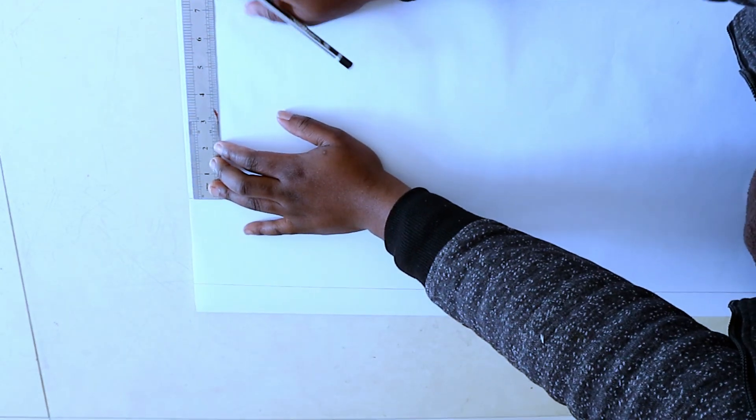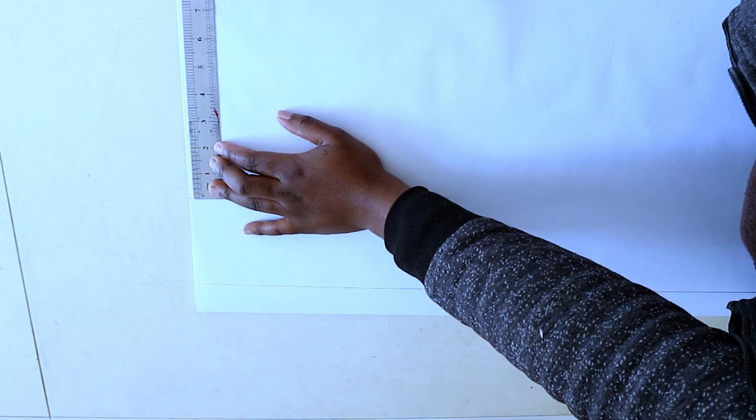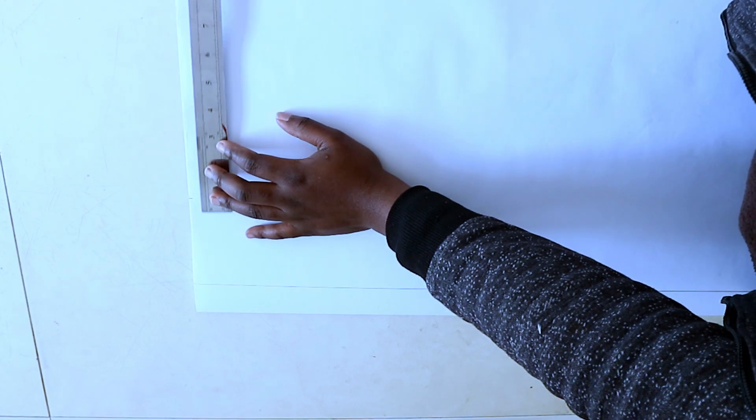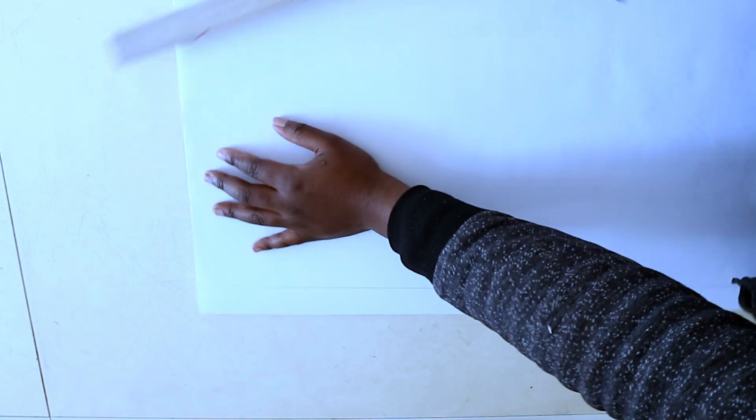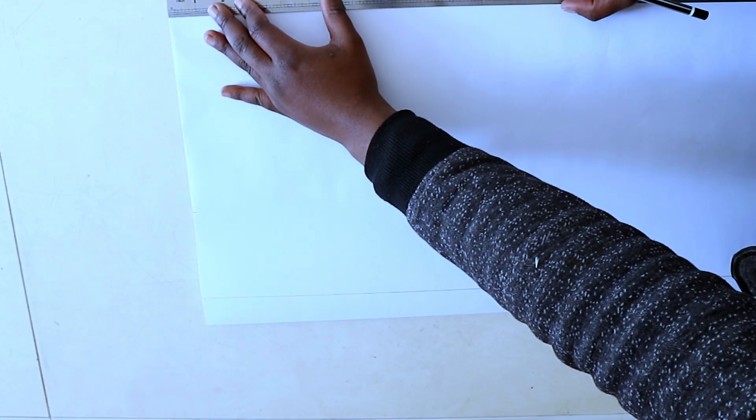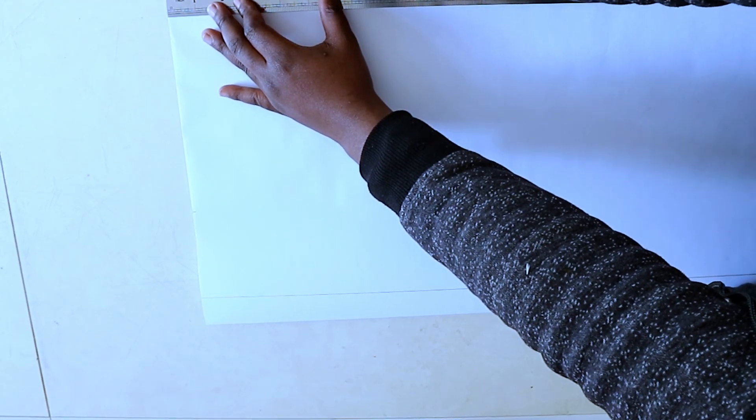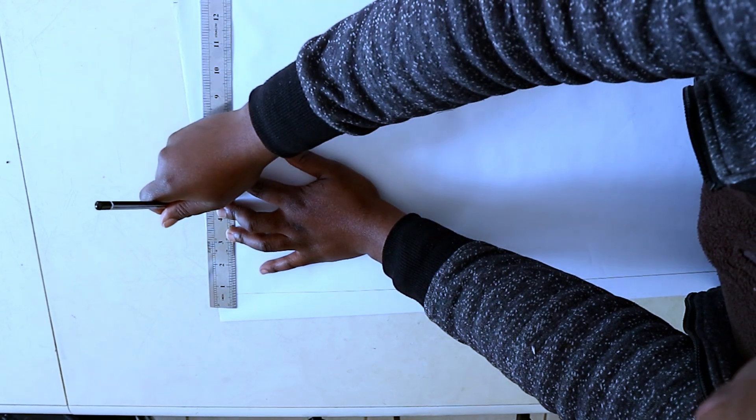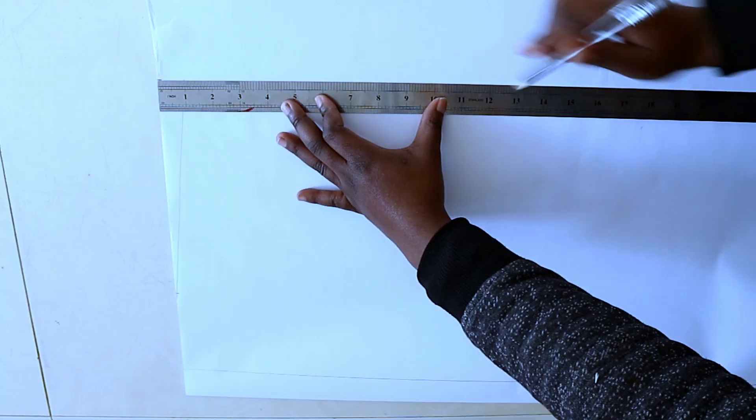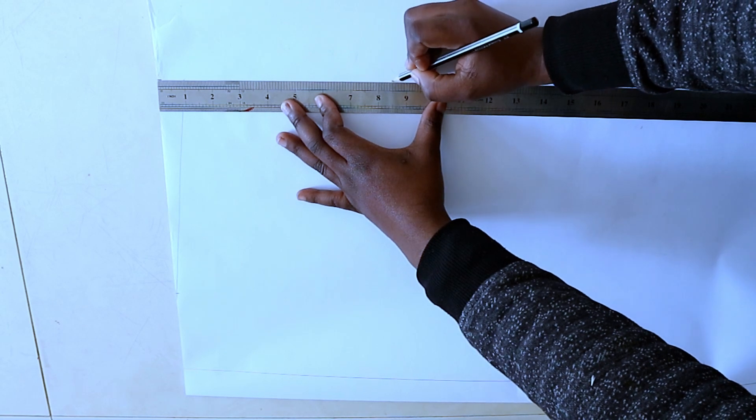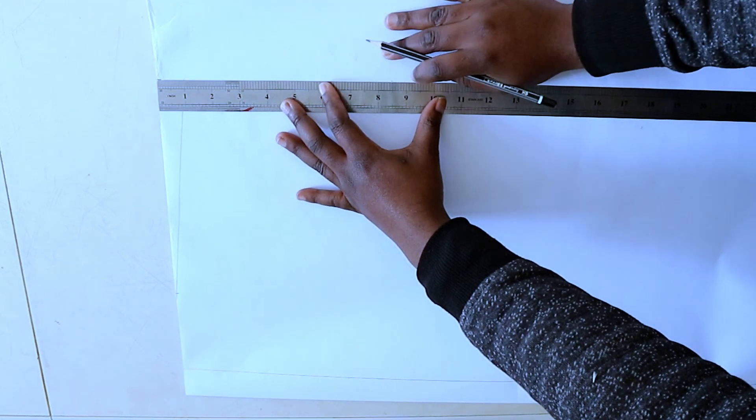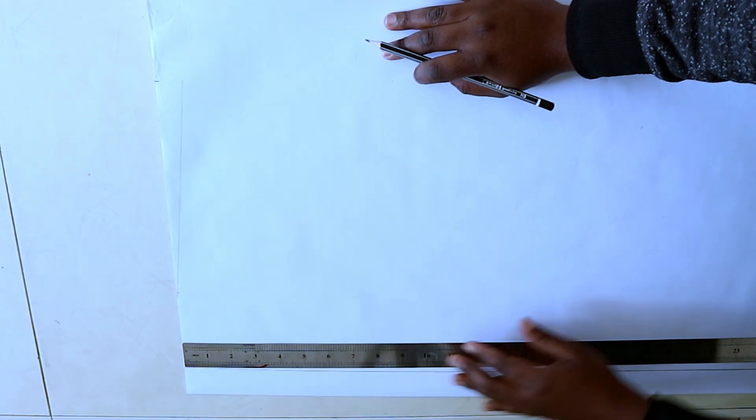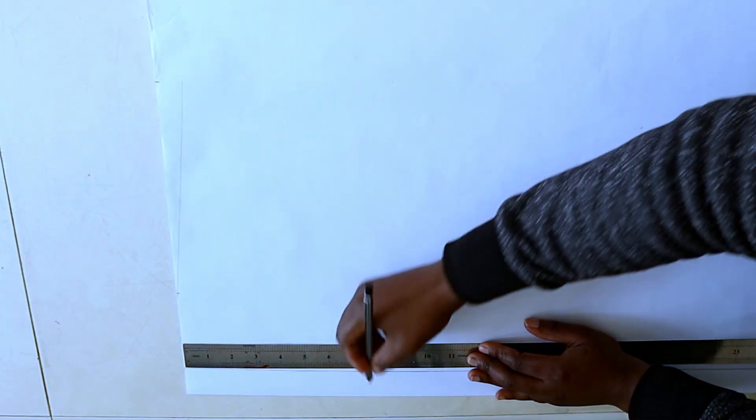From the center front line, mark 3.5 inches, and from that point mark 5.5 inches. This is the standard measurement for the neckline and the shoulder line, which includes 0.5 inch seam allowance. From the shoulder points, come down by 1 inch and then draw the shoulder slope like so.